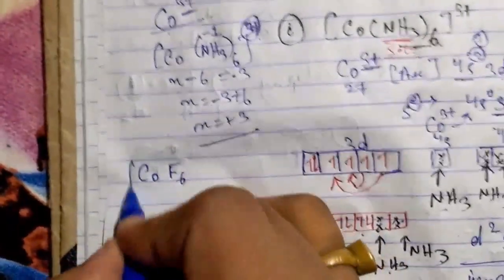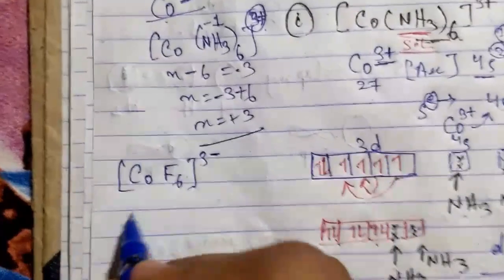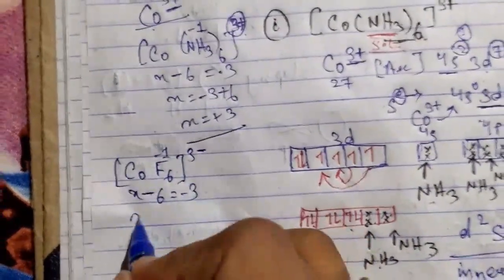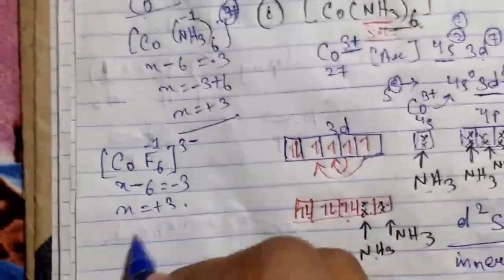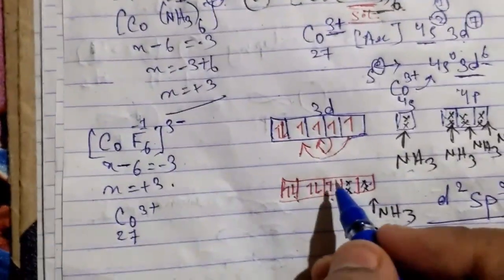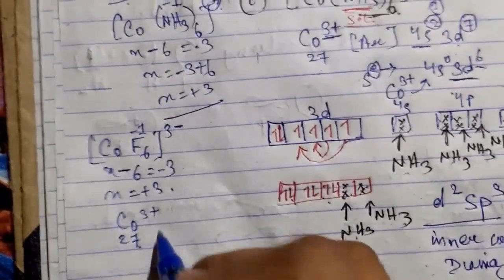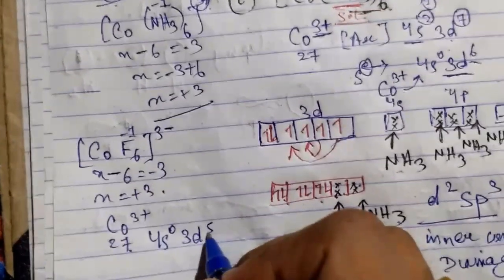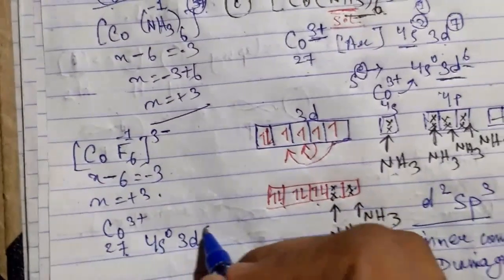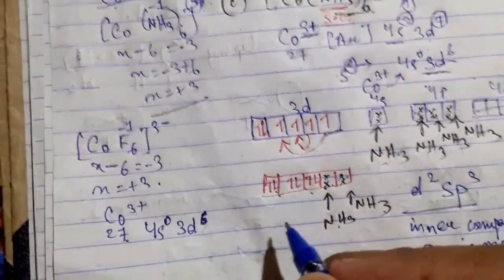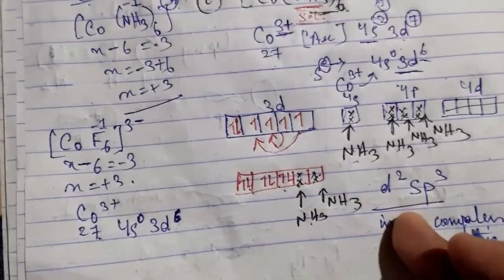Now, CoF₆³⁻: the oxidation number x — fluorine is −1, so x + (−1)×6 = −3, meaning x = +3. So Co is 3+ in CoF₆³⁻. Cobalt atomic number is 27, with electronic configuration giving 3d⁵ then 3d⁶.